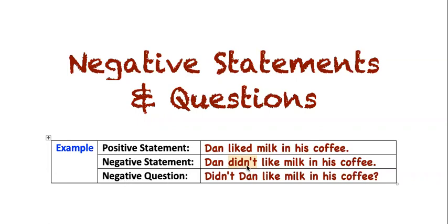To make it a negative question, we just change the order of the first two words, so it says 'Didn't Dan like milk in his coffee?' This could be a question you're actually asking because you want to know, or it could be a rhetorical question, which means everybody knows the answer but you're asking it to make a point. Let's go to the next example.